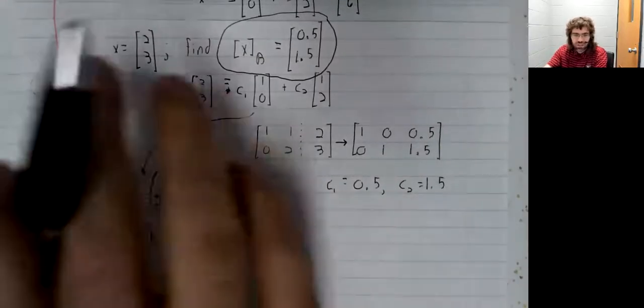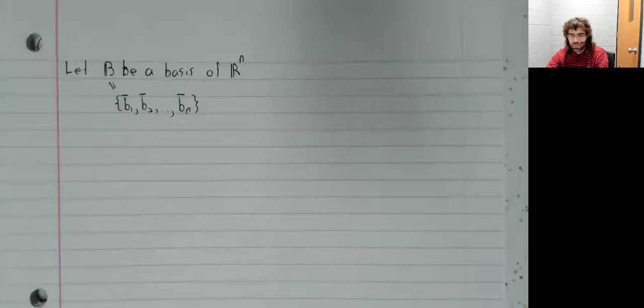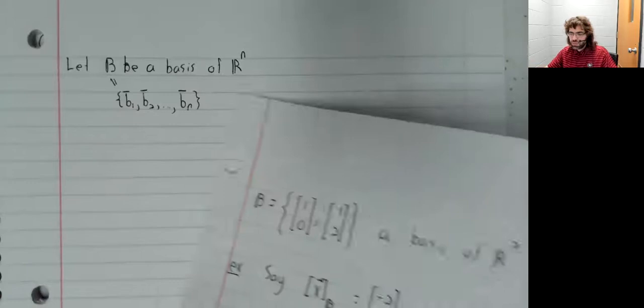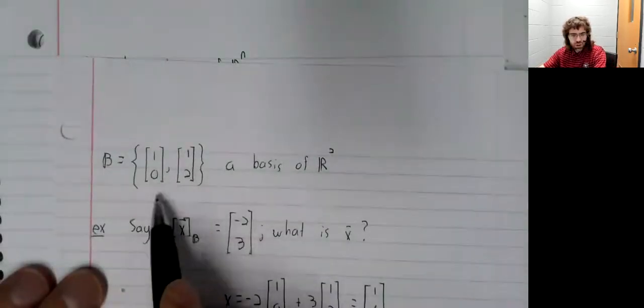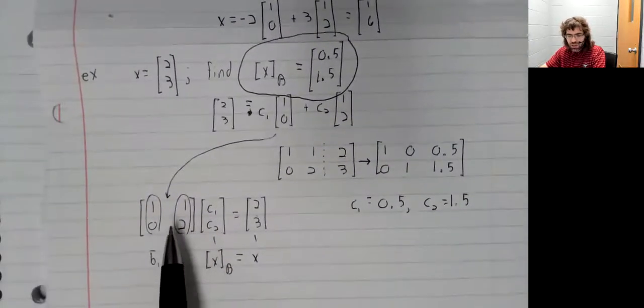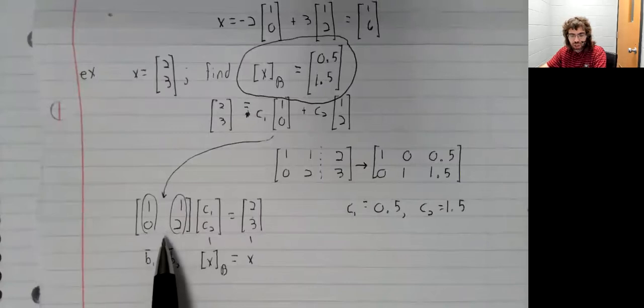With this example as our motivation, suppose we have a basis of Rn. Then you see here we had a basis of R2 and later on we had this equation where this matrix shows up.